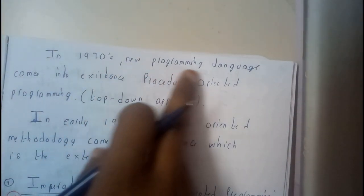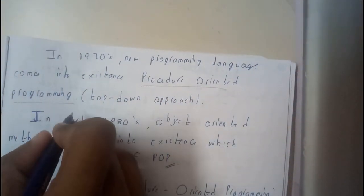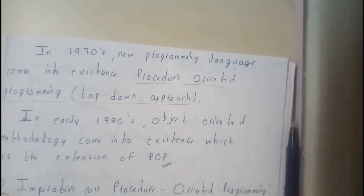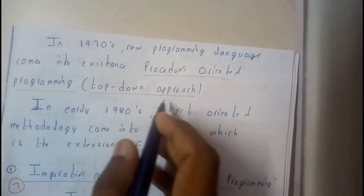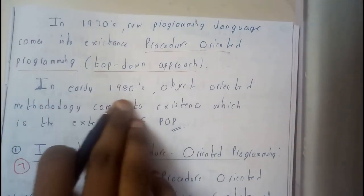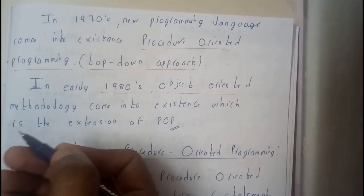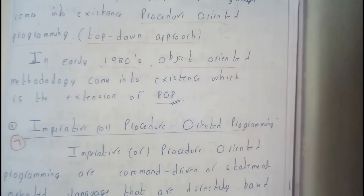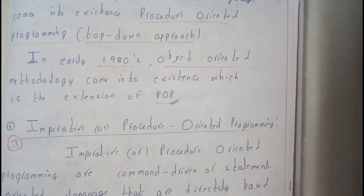In the 1970s, new programming languages came into existence like procedure-oriented programming languages, which follow a top-down approach. Similarly, in the 1980s, object-oriented programming languages came into play, which are an extension of procedure-oriented programming languages. We will be going through these two individually in the next tutorial, along with two other programming language methodologies.